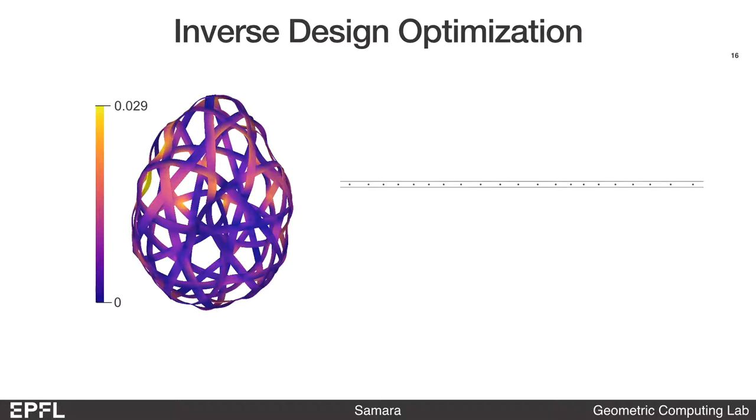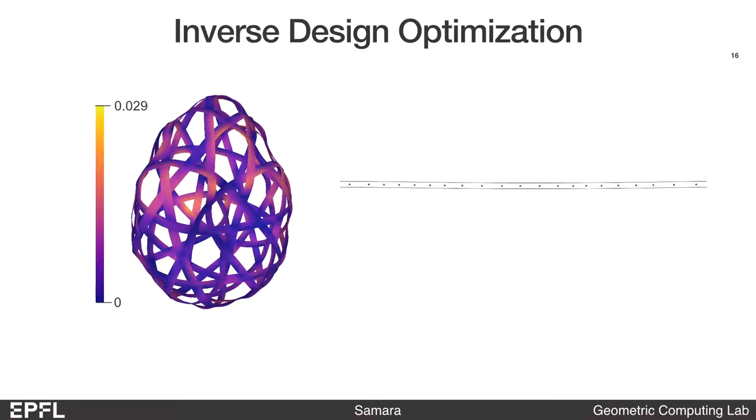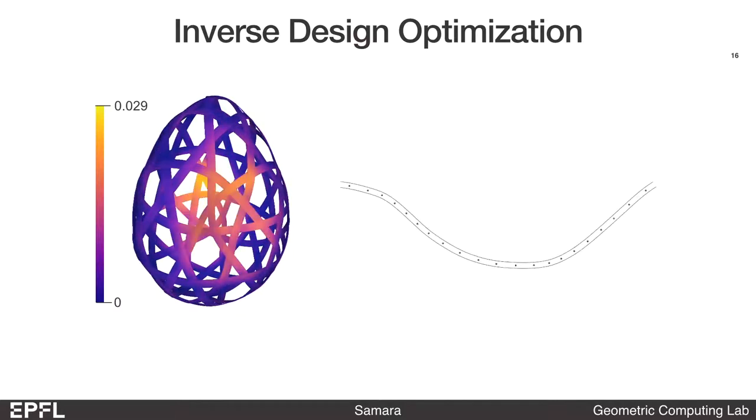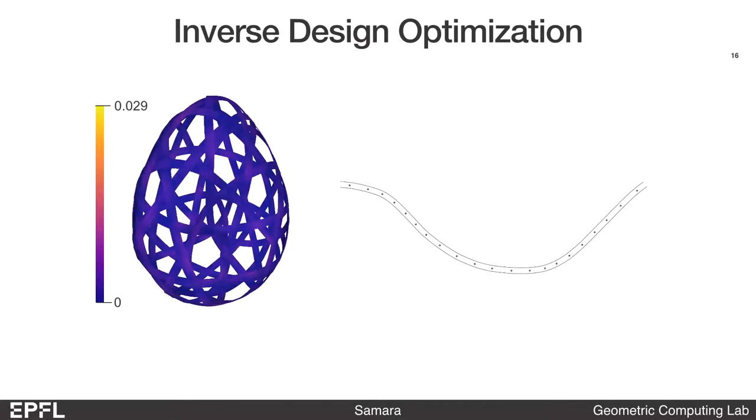Here is a recording of the optimization process. The color encodes the distance from the woven structure to the target surface. You can see that this value is decreasing while the ribbon is going from straight to curved.